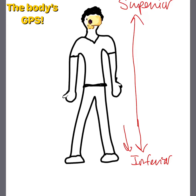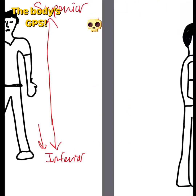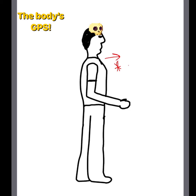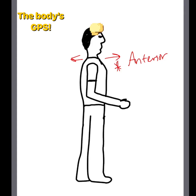Then we have anterior versus ventral. Anterior or ventral means towards the front of the body or in front of the body. The contrary to anterior or ventral is posterior or dorsal, meaning towards or at the back of the body, or behind.